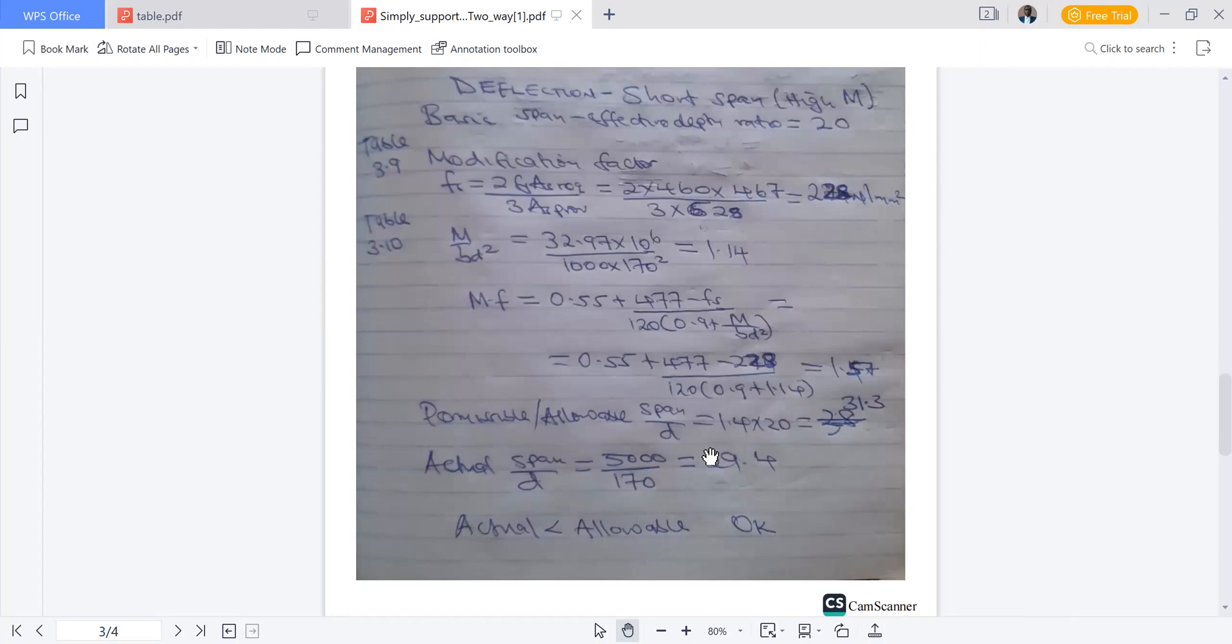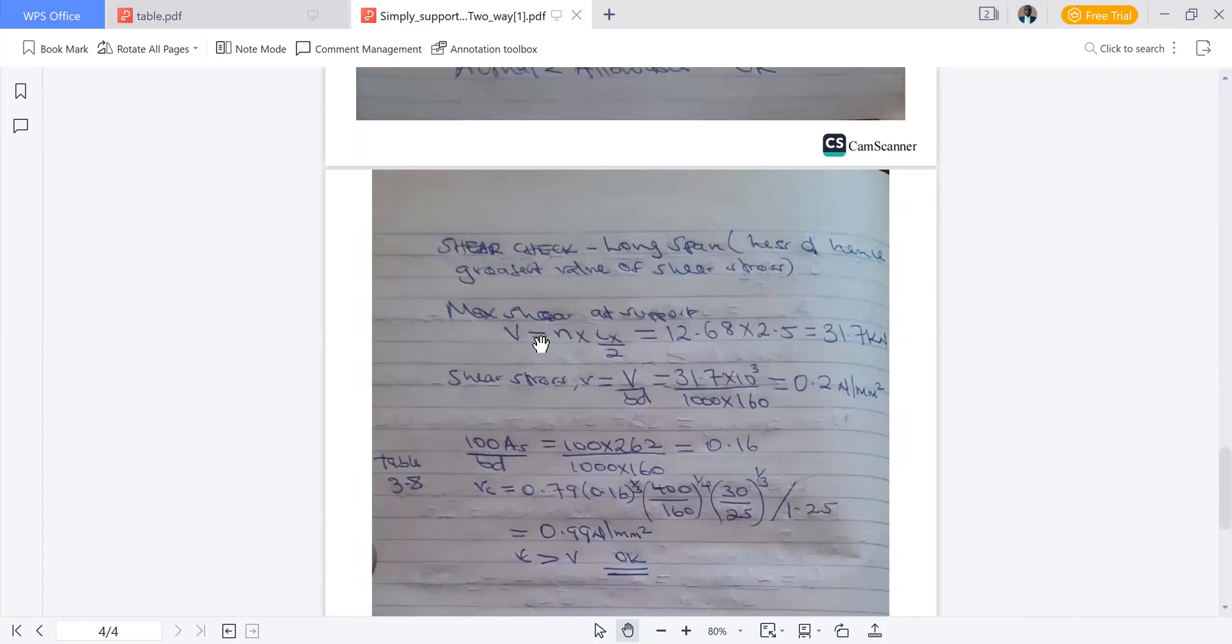We go to shear check. You check along the long span because long span has a smaller effective depth, meaning the shear stress will be greatest. In the longer span there's less steel area, that is why we concentrate on the long span. Maximum shear stress at support is wl over 2, but here our w is n, so n times lx over 2. 12.68 times 2.5 over 2, which is 31.7 kilonewton.